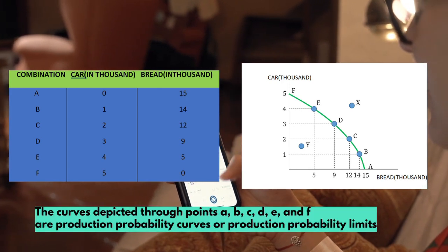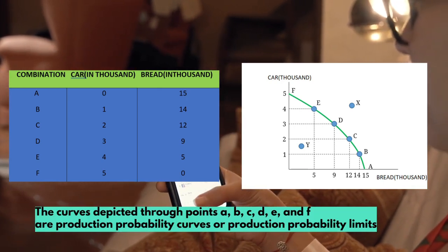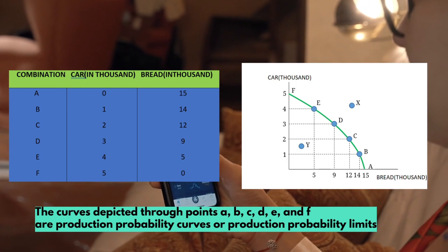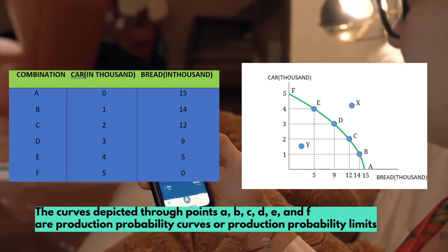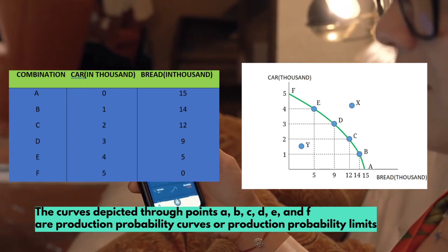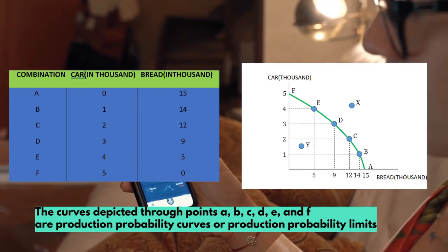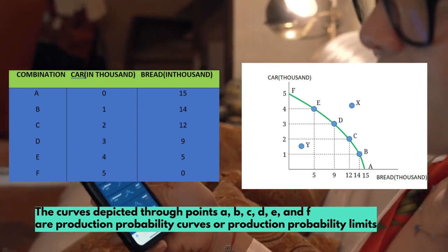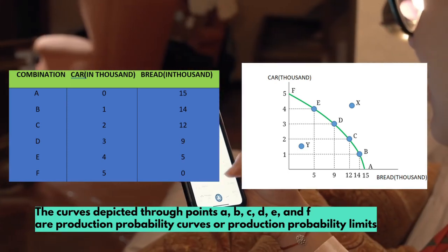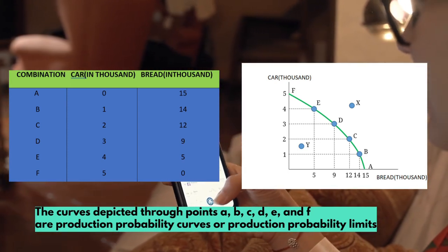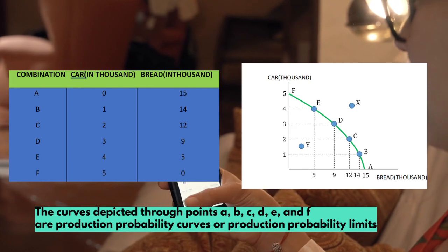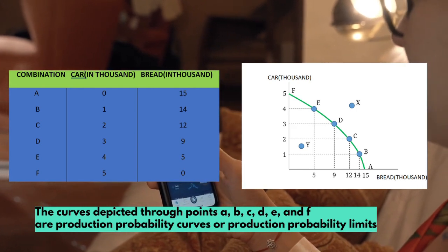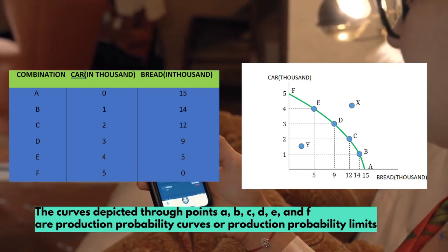The curve depicted through points A, B, C, D, E, and F is the production possibility curve or production possibility frontier. This curve describes the most efficient production limit that an economy can produce. An outcome is said to be efficient if the economy can produce the most optimal combination of existing resources.